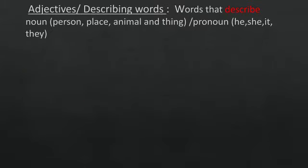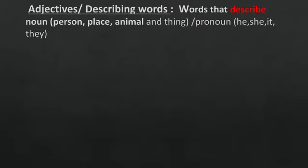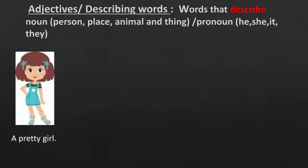Words that describe these nouns like person, place, animal and thing or a pronoun like he, she, it, they are called the adjectives or the describing words.